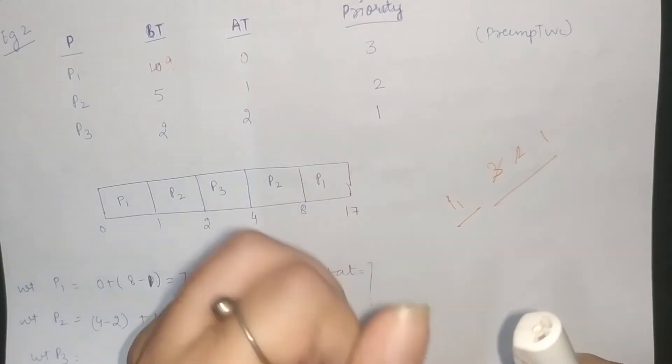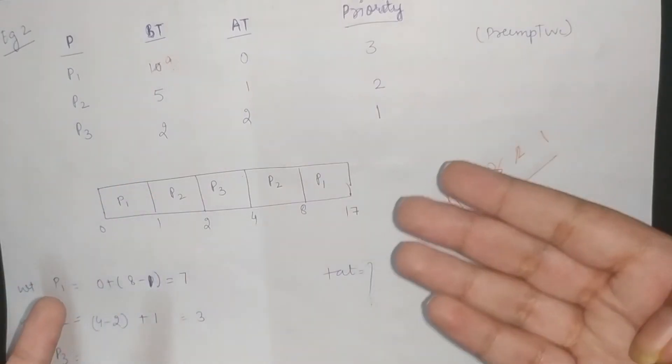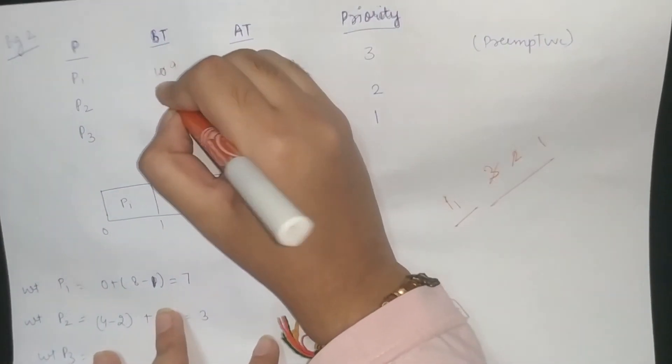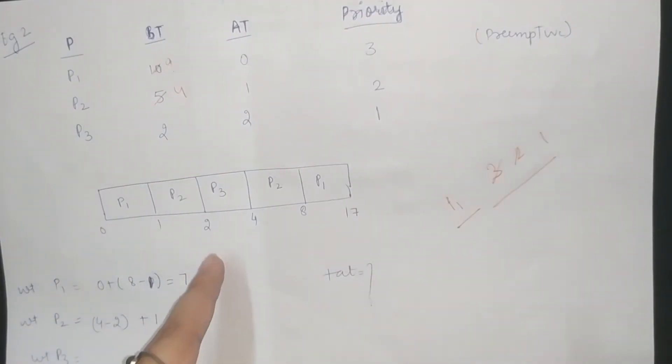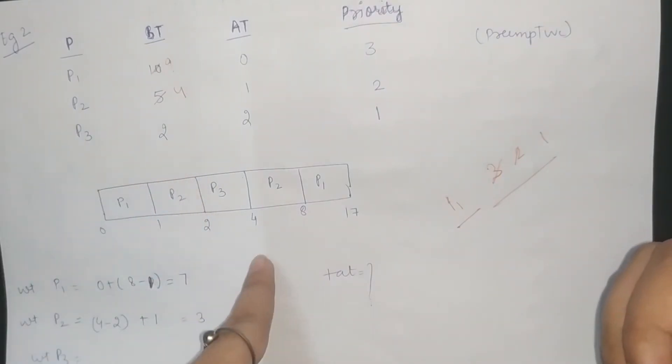Now, compare them both. Between burst times 9 and 5, obviously 5 has higher priority. We have considered this 1 second. Now, as we have reached P2, 1 plus 1 is 2, we have seen P3 in queue. Now, the highest priority is P3 and the least burst time is also P3. So, we will execute P3 fully.